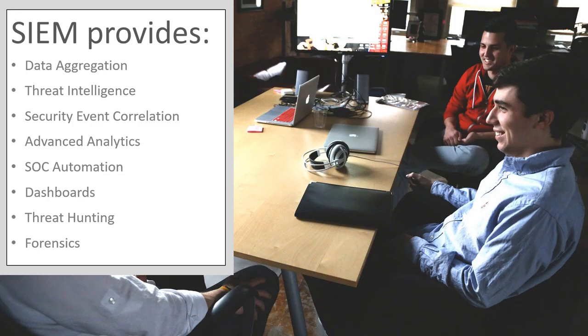A SIEM solution consists of a number of components involved in security information management and security event management, including the following: data aggregation, threat intelligence, security event correlation, advanced analytics, SOC automation, dashboards, threat hunting, and forensics. Let's explore the SIEM solution components in more detail to see how they work and fit together to analyze the incidents.